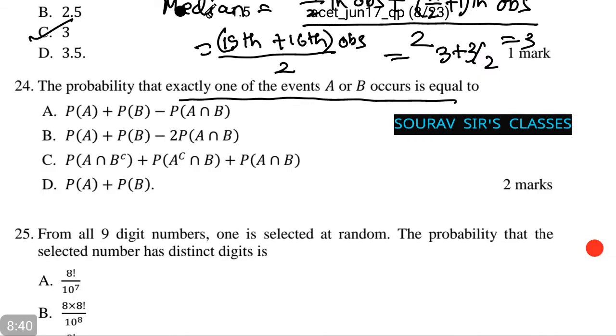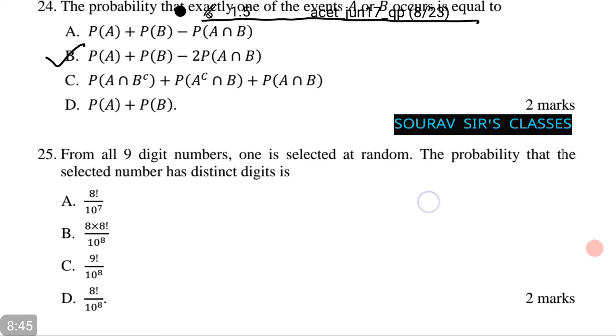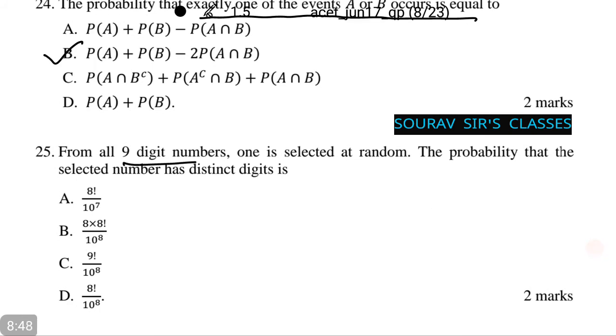Thus, option number B is the correct answer. Let's do one more question. From all 9 digit numbers, one is selected at random. The probability that the selected number has distinct digits is among the following. The 9 distinct and ordered digits can be chosen from 10, that is 0 to 9 numbers, in 10P9, which is equal to 10 factorial ways.